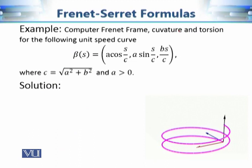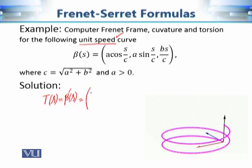In the next part we apply these Frenet-Serret formulas to extract curvature and torsion for a given curve. These formulas apply to unit speed curves. For our example, which is a unit speed curve, we calculate the tangent vector field as β'(s) = T(s) = (-a/c)sin(s/c), (a/c)cos(s/c), b/c), where c = √(a² + b²).